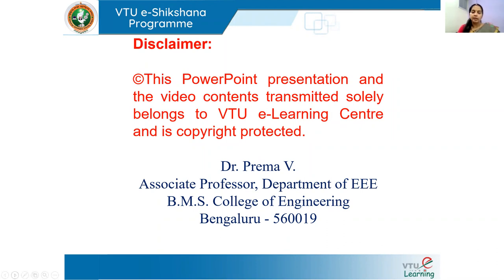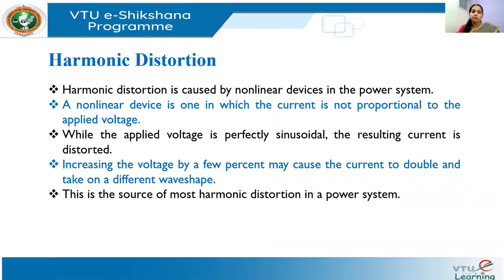In the last class we saw an introduction to harmonics and the basic definition of harmonics, as well as the common effects of harmonics in various power system components. Today we are going to see harmonic distortion, the difference between voltage and current harmonics, the difference between transients and harmonics, and the effect of harmonics on basic sinusoidal power components. This is the second lecture of Electrical Power Quality, course code 18EE825.